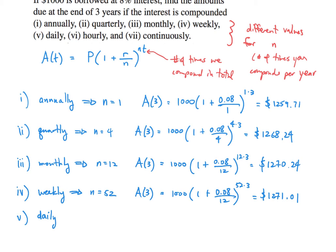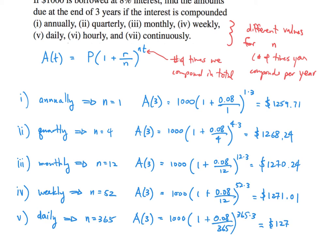Let's do daily. Daily means that because there are 365 days in a year, our n is 365. So after three years, we're going to get 1,000 times 1 plus 0.08 over 365, all raised to the 365 times 3 power. And we get $1,271.21.